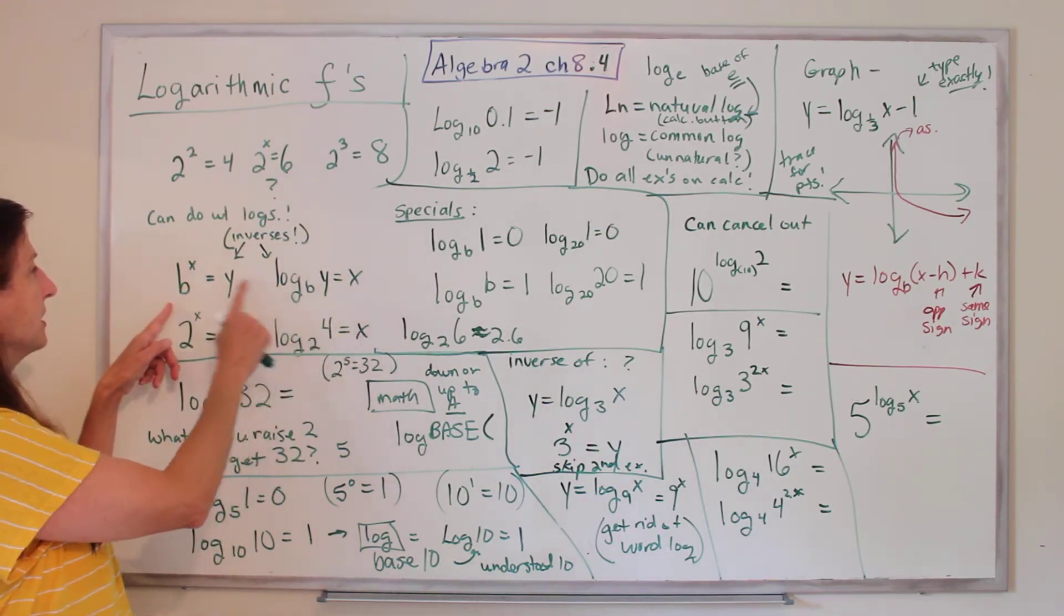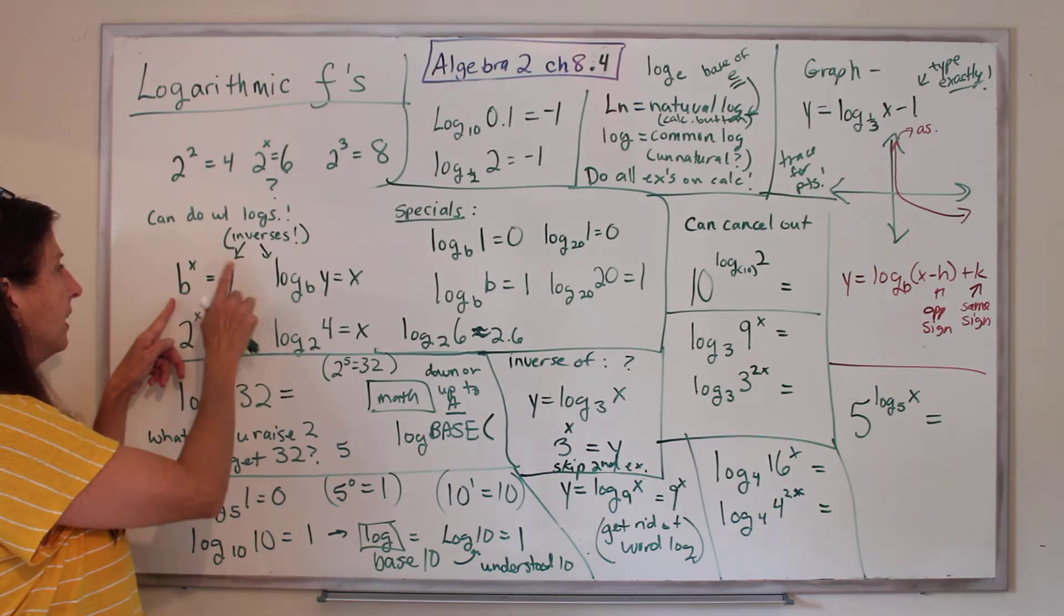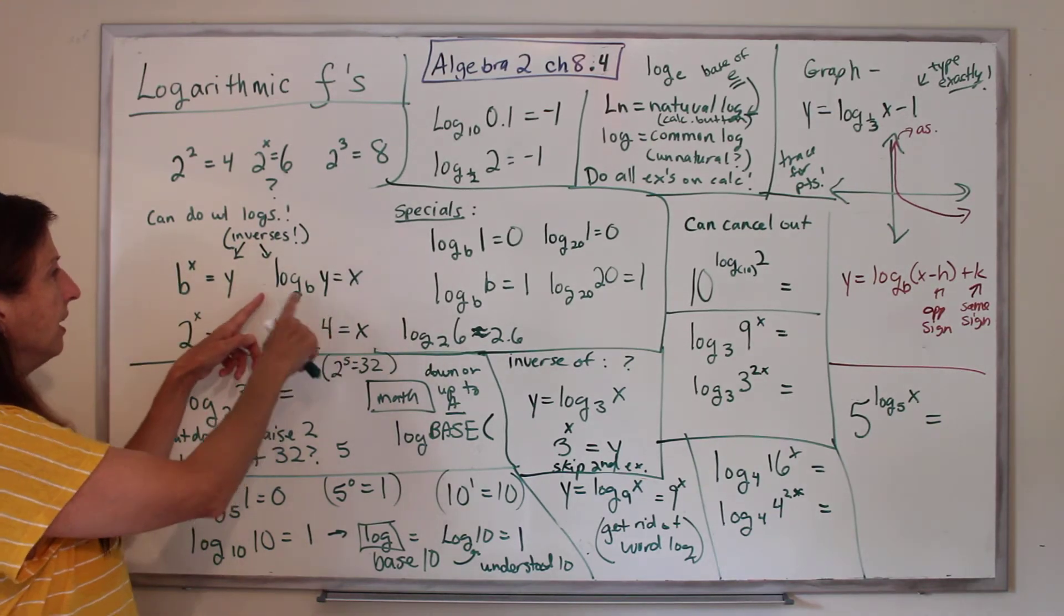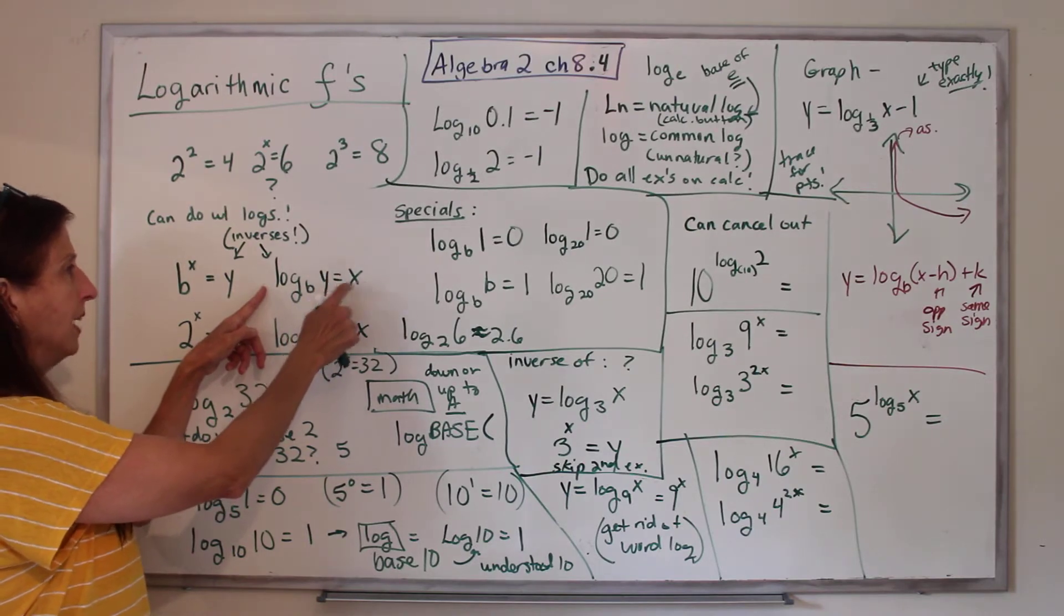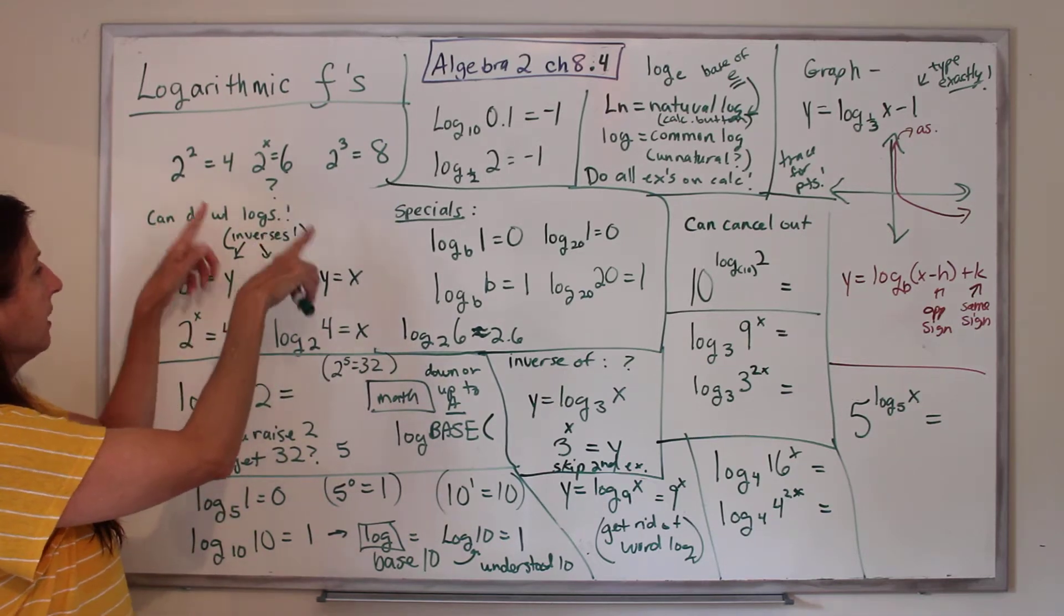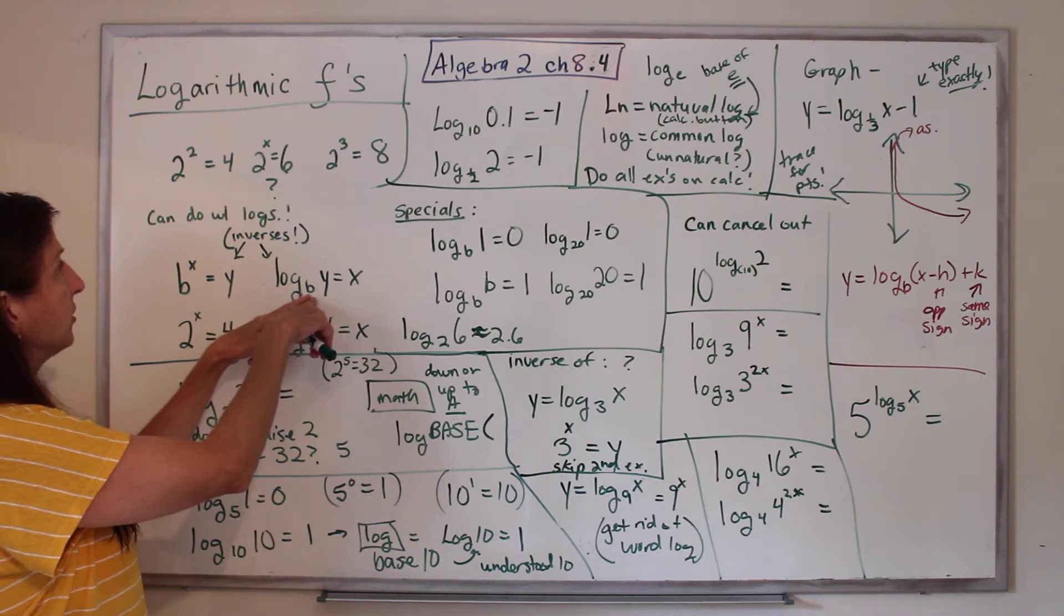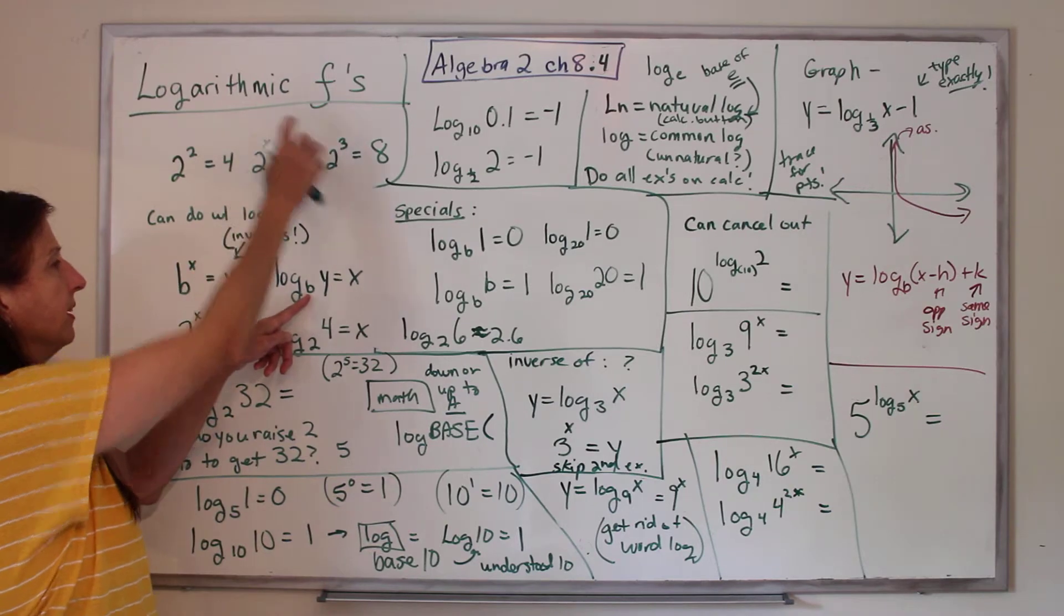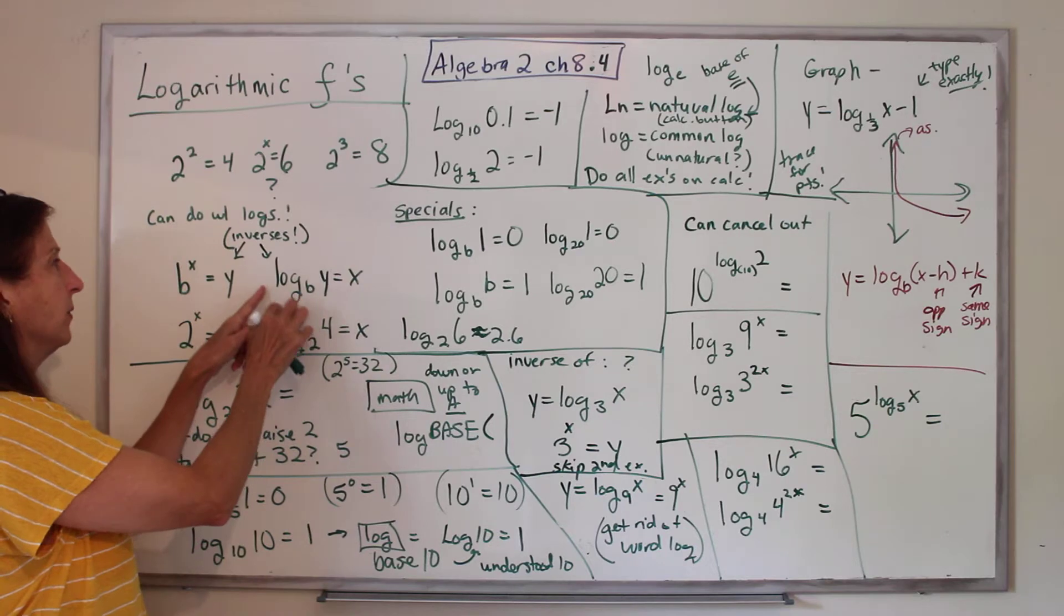So we have inverses here. If you have a base to the x power, then it equals y. Now, if you do it as a log, it would be log to a base, y equals x. It is this question. It's the question, what, if you take base 2, and we know that if you raise it to x, you get 6, you can find out what that x is by doing log.